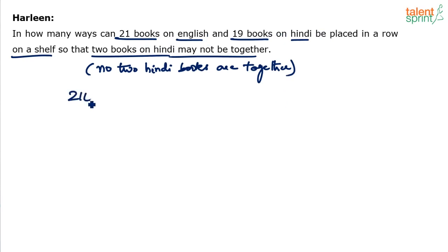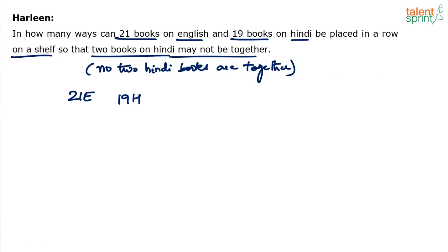Simple. Whenever we need an arrangement where one type of variable is not supposed to be together, we always arrange the other type first. We've seen this concept before with words — no two vowels together, no two consonants together. Here, think of English books as consonants and Hindi books as vowels. Since the vowels should not be together, we first arrange the consonants — i.e., first arrange the 21 English books.